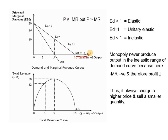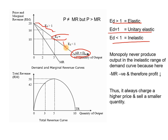The demand curve for monopoly has an elastic range (Ed > 1), a unitary elastic point (Ed = 1), and an inelastic range (Ed < 1). Monopoly never produces output in the inelastic range because MR is negative there, meaning profit drops. So maximum production in this example is 5 units — producing beyond that would decrease total revenue and profit.